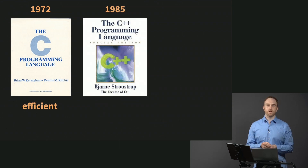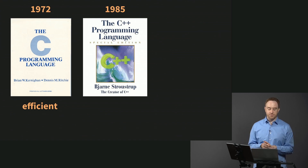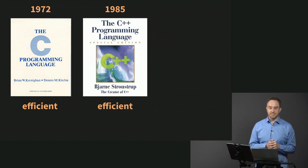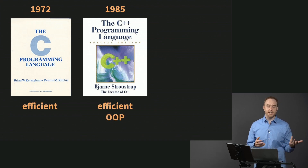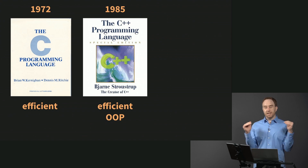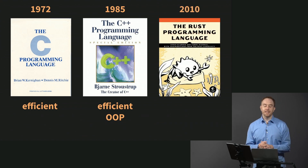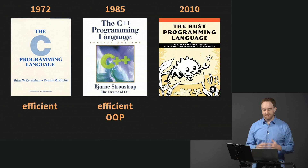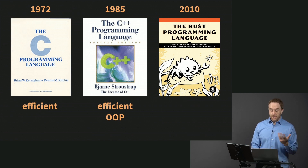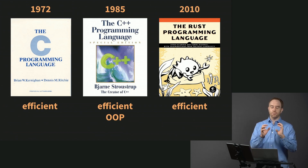C++, from 1985, is also one of the most popular high-performance languages and still one of the most widely used today. One of C++'s goals was to introduce object-oriented programming to C so you could have those constructs as a convenience while maintaining the same level of efficiency and performance. It wasn't until 2010 that we got something that can be considered a serious challenger to C and C++ — which is Rust. Rust is also very, very efficient, with almost nothing between a compiled Rust program and what the hardware is capable of.